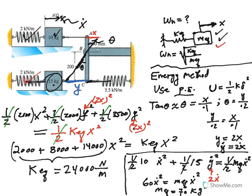So now let me go to the next page. So far we got our K equivalent equal to 24,000 newtons per meter, and we got our mass equivalent equal to 70 kilograms.